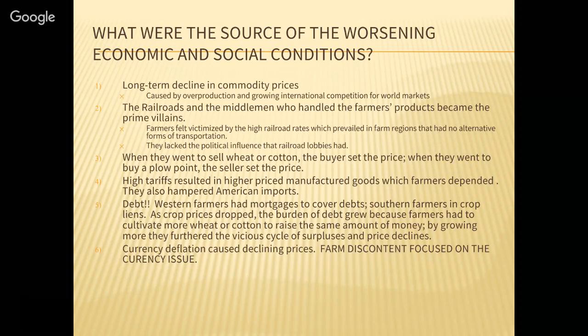One of the major features of misery on the farm is debt — the farmer is always in debt. Western farmers had mortgages to cover their debts; Southern farmers had crop liens. As crop prices dropped, the burden of debt grew because farmers had to cultivate more wheat or cotton to raise the same amount of money. By growing more, they furthered the vicious cycle of surpluses and price declines. Currency deflation caused declining prices, and farm discontent focused on the currency issue.